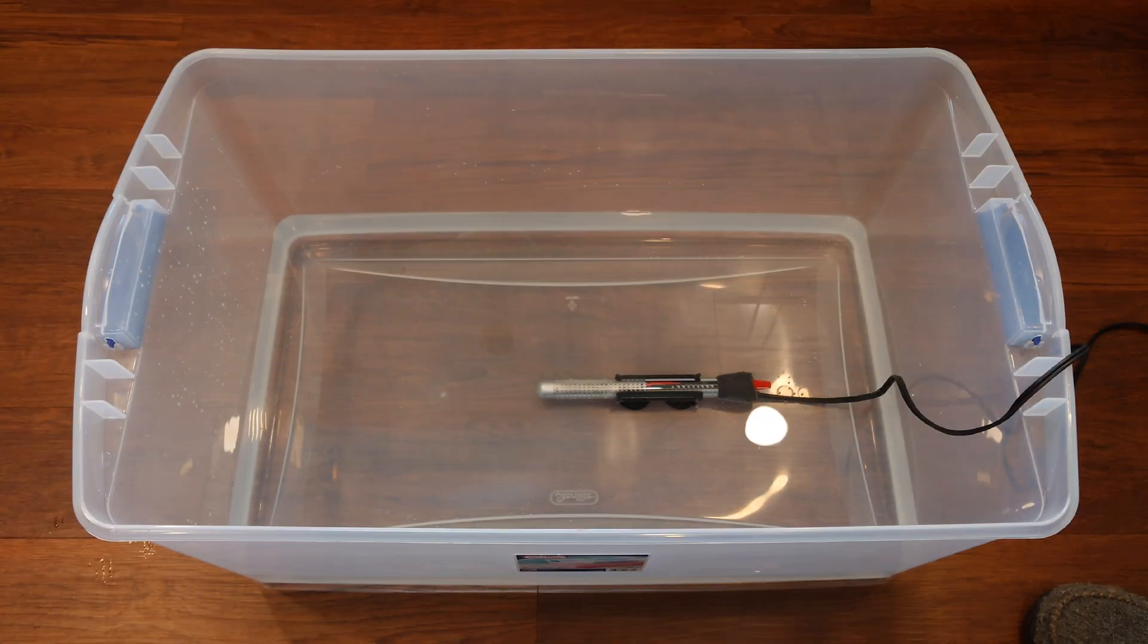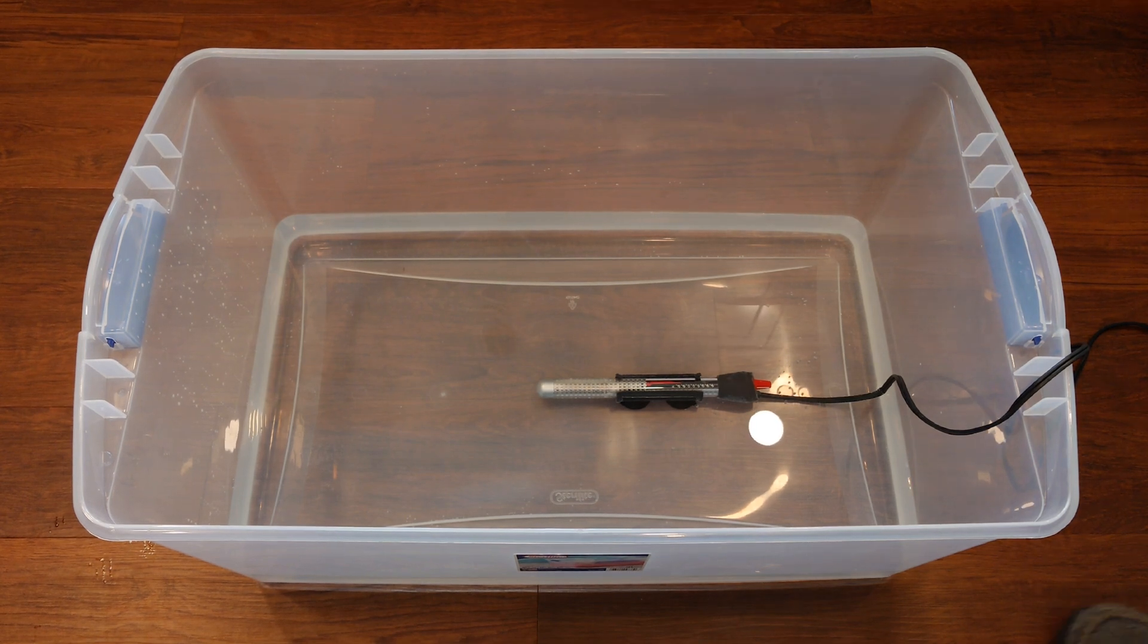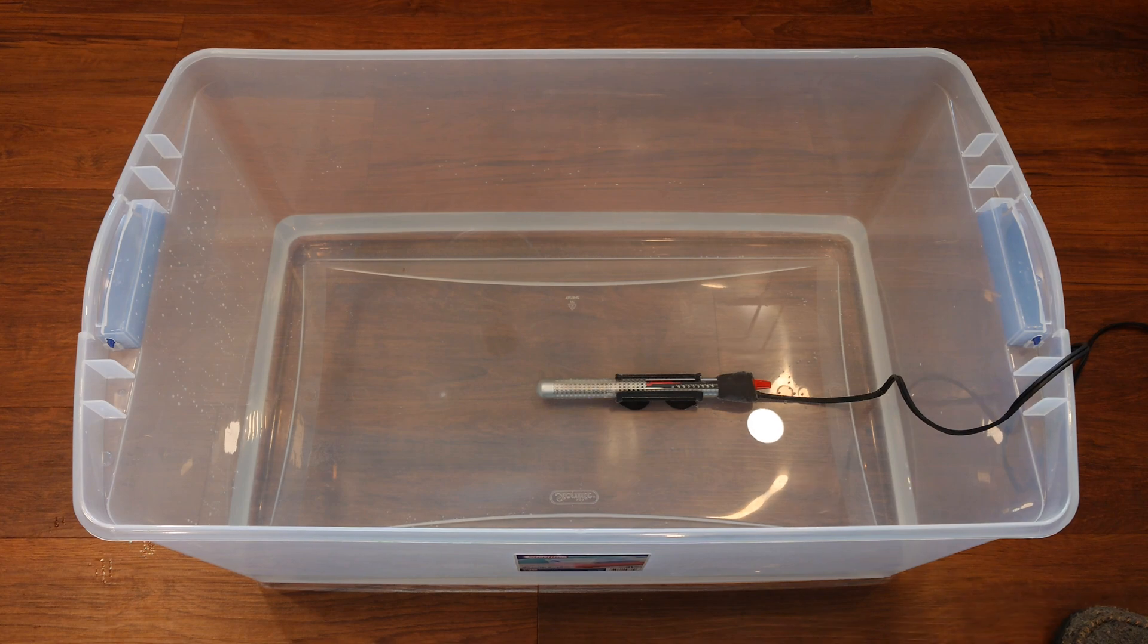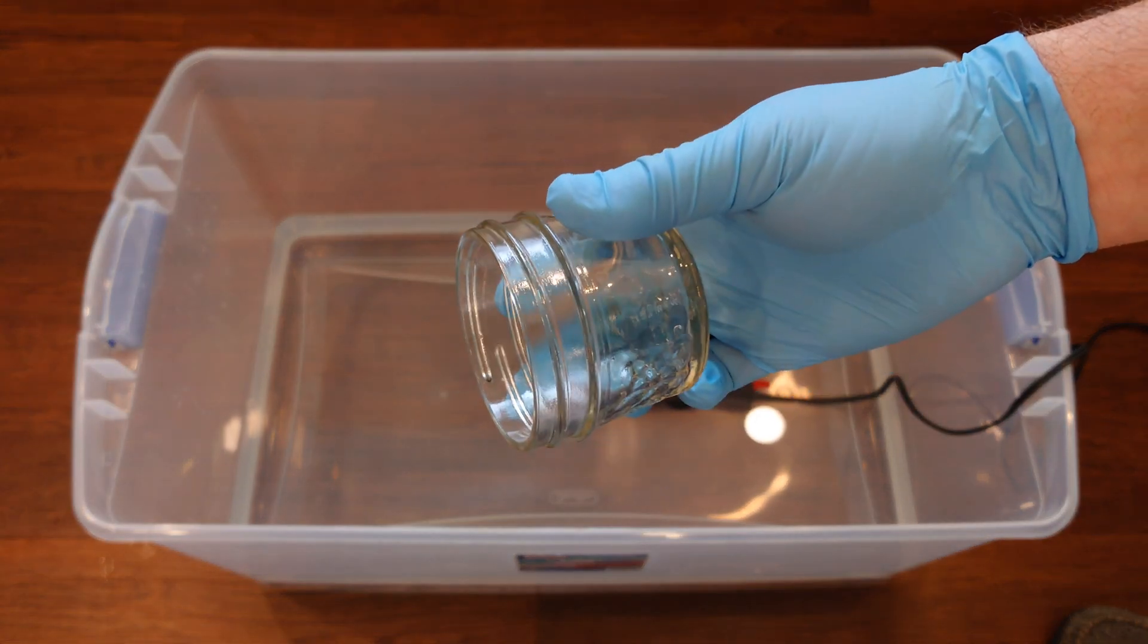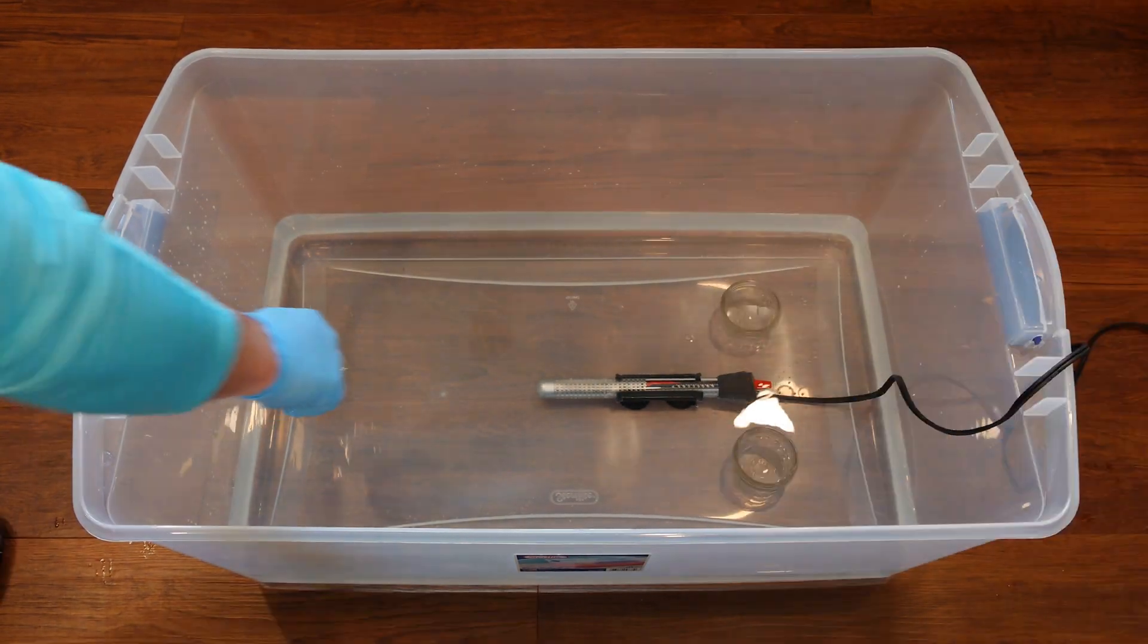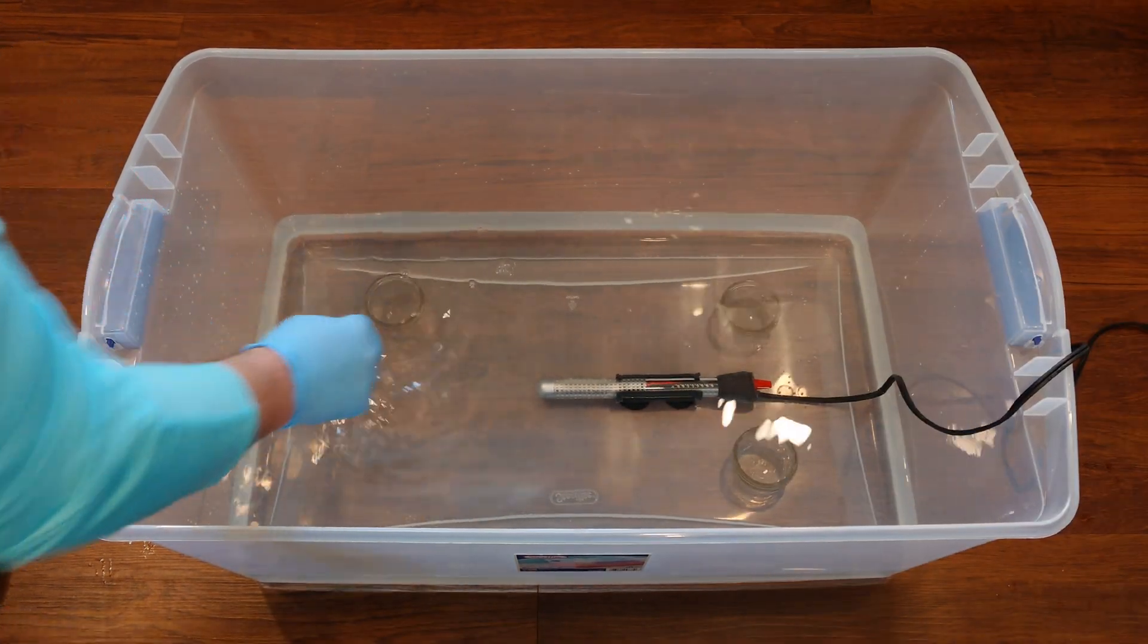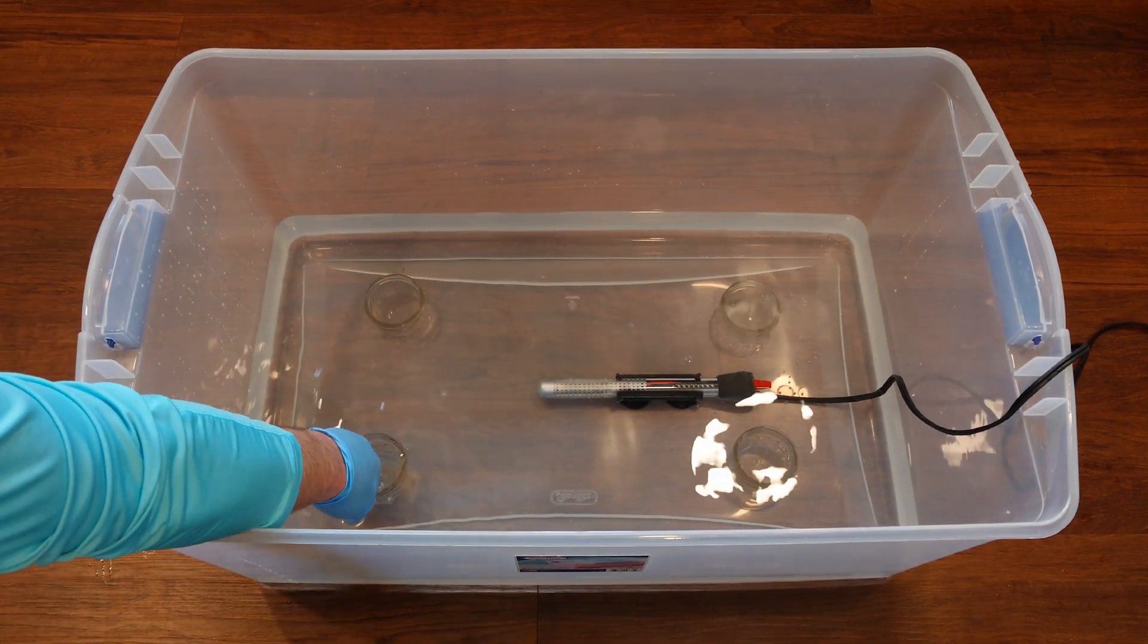Next we're going to be nesting a second tote down inside the first, and we have enough water in here that that second tote should not come into contact with that aquarium heater. But just to make sure, we're going to use some four ounce canning jars. I'm just going to put four of those down in the water. When we nest that second tote in, that's just going to make sure that that bottom doesn't get compressed down into that aquarium heater if you add a bunch of weight with jars and substrate bags.